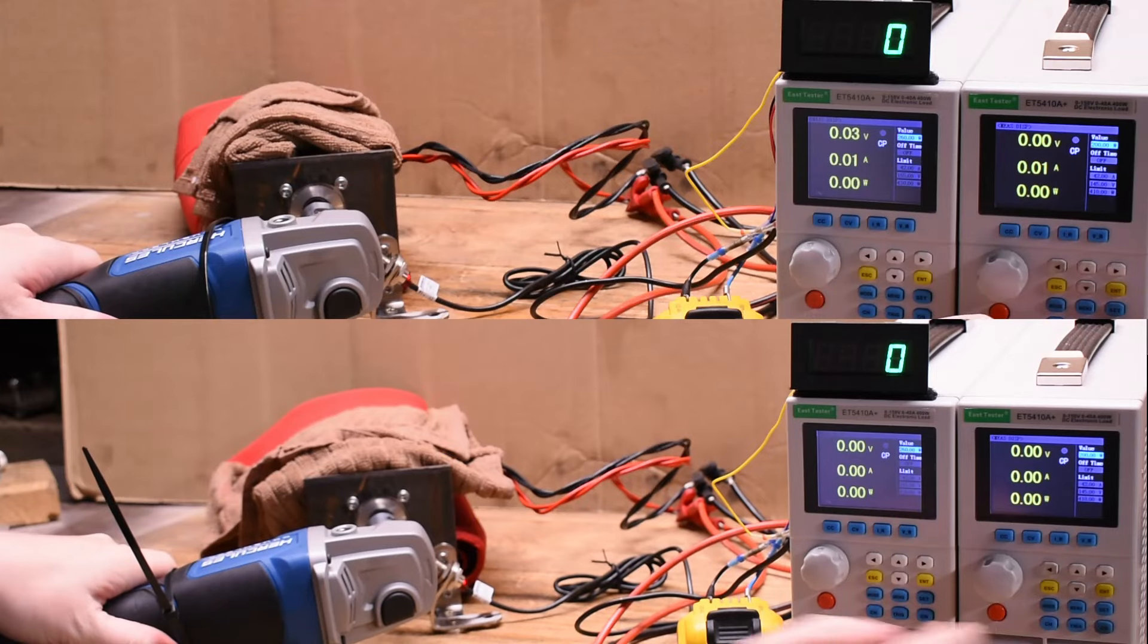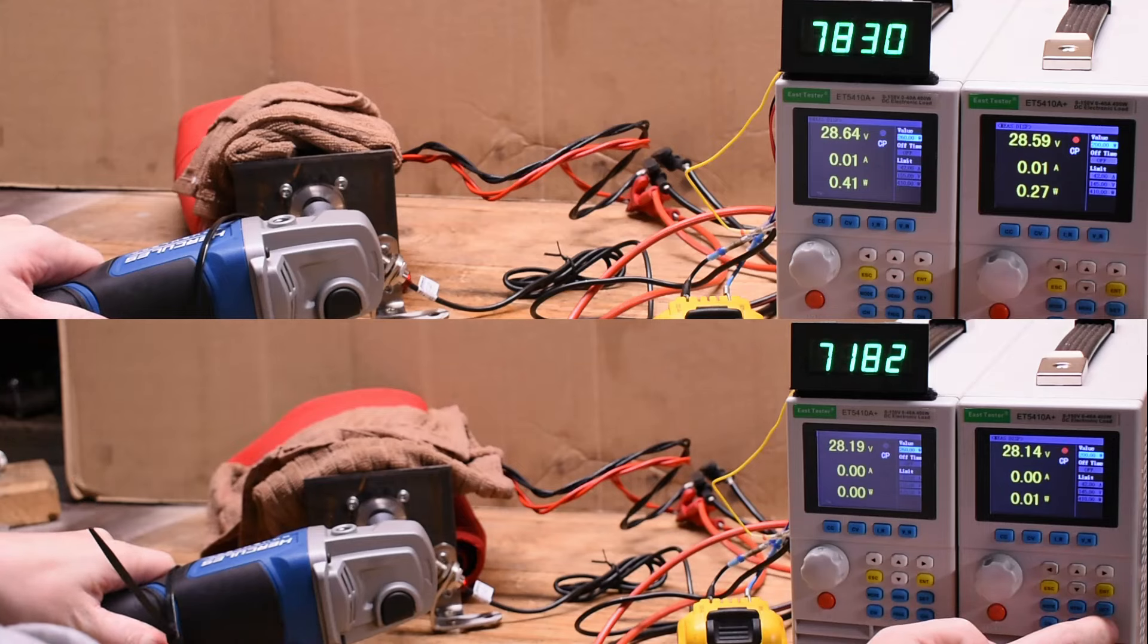So it cuts out at 570 watts, while at 560 was still going. All right, so 560 it is, a huge improvement over the 5 amp hour pack and now above the Bauer for sure.